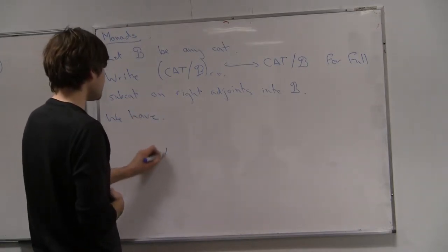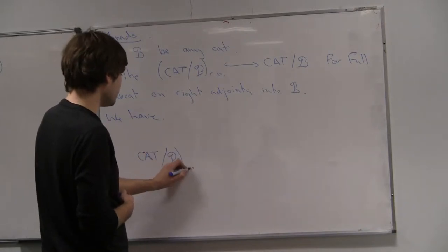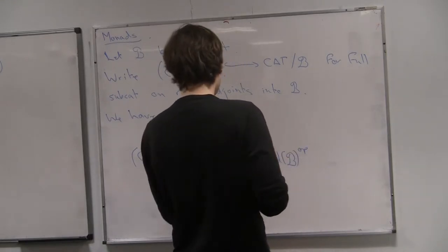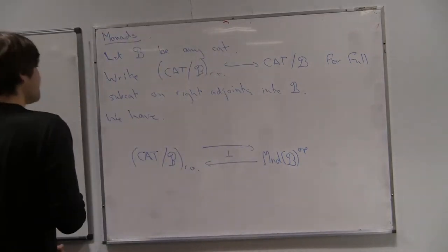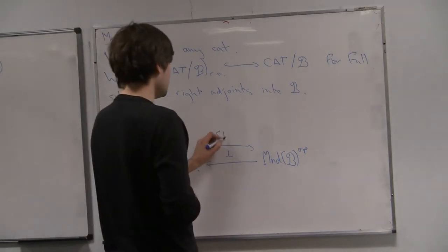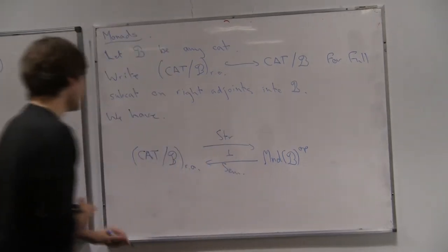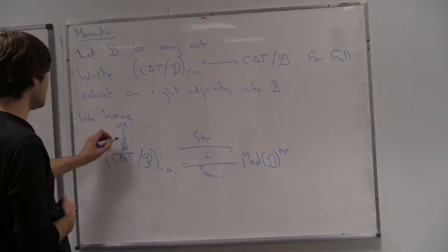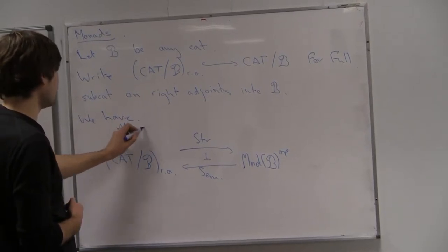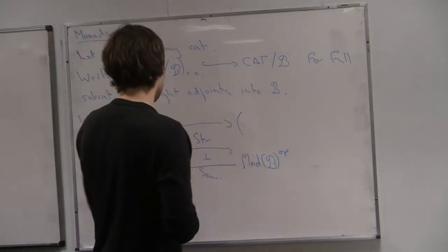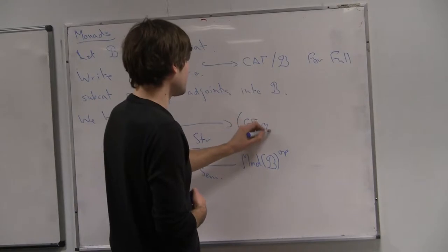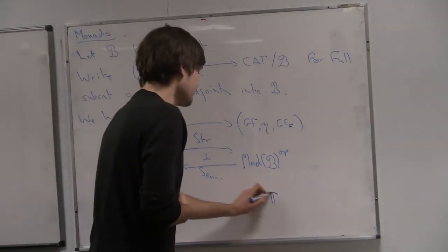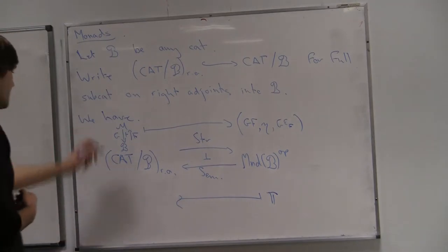Our structure-semantics adjunction for monads looks like the following: on one side we have Cat/B_RA, and on the other we have the category of monads on B. On the right-adjoint side, if we have some functor G into B with left adjoint F, this gets sent to the monad induced by the adjunction. In the other direction, we send a monad to the Eilenberg-Moore category with its forgetful functor.